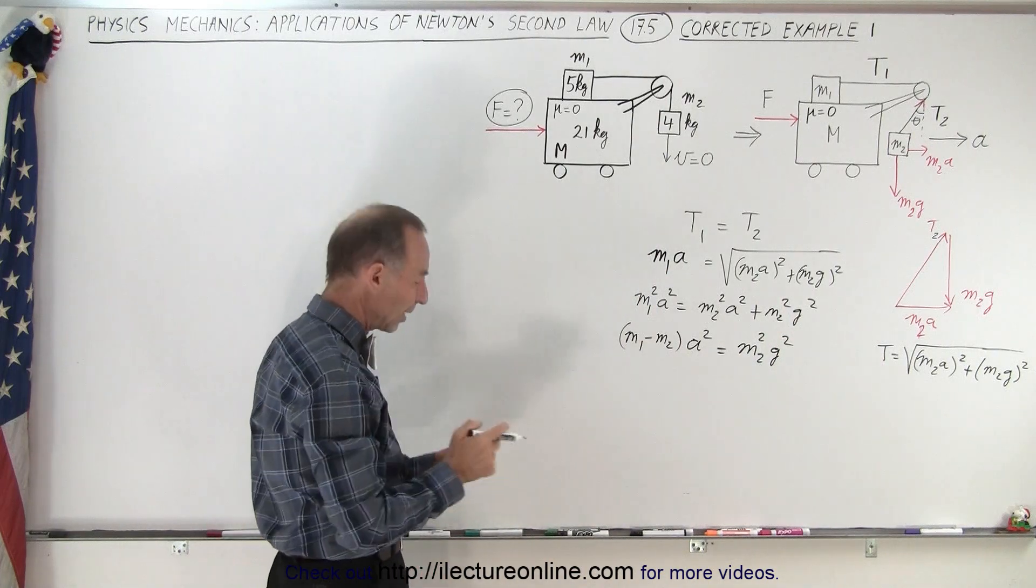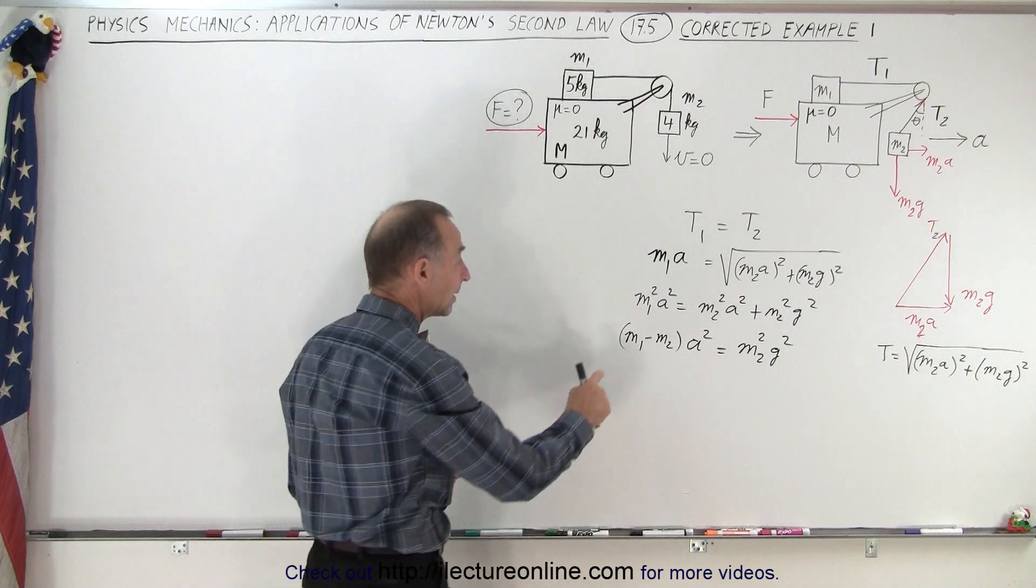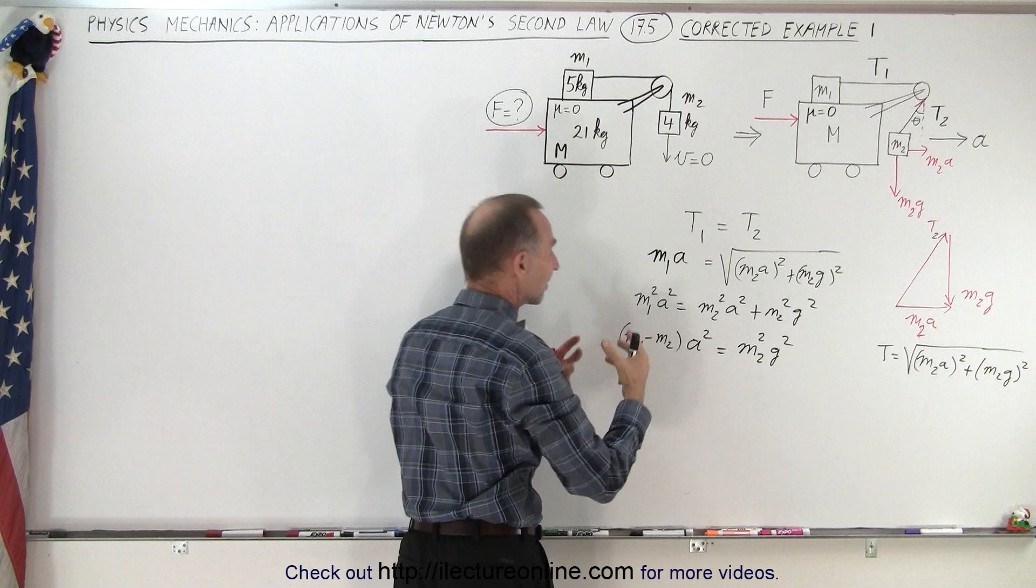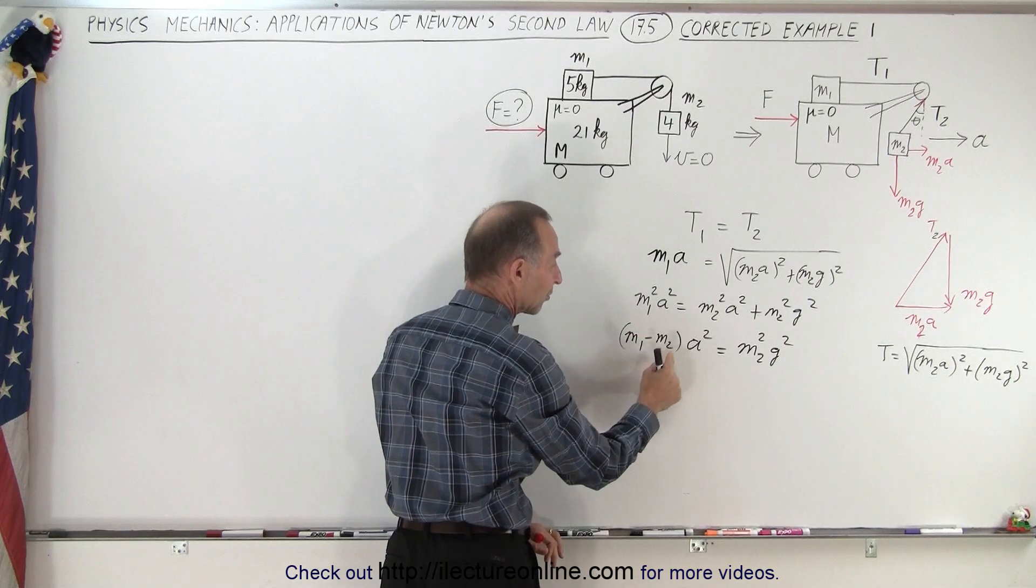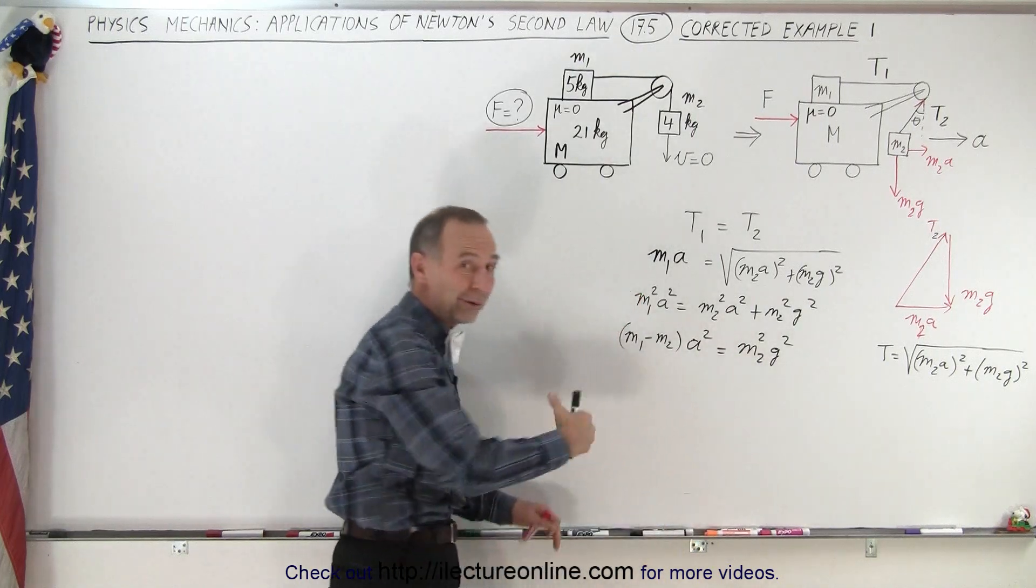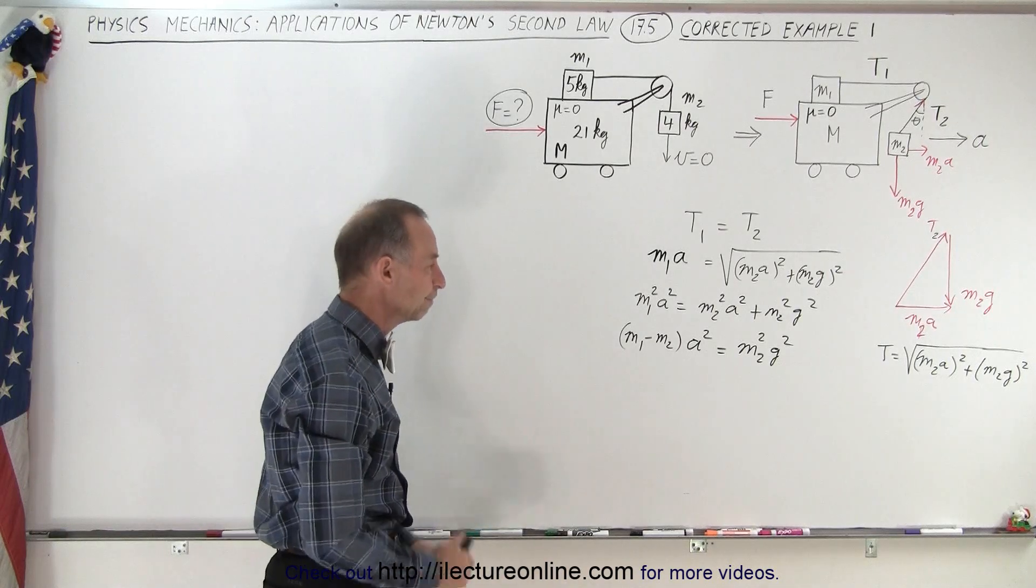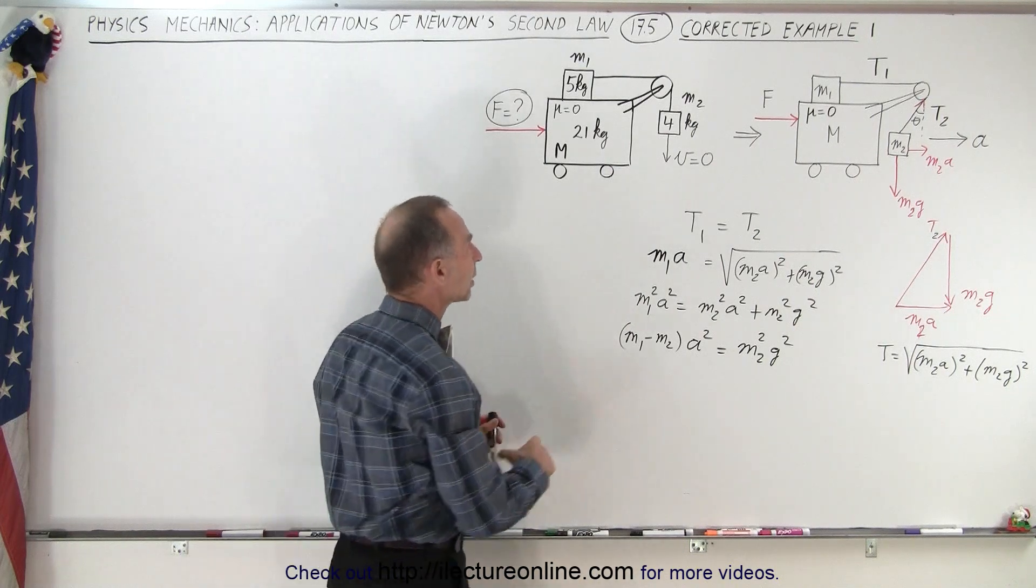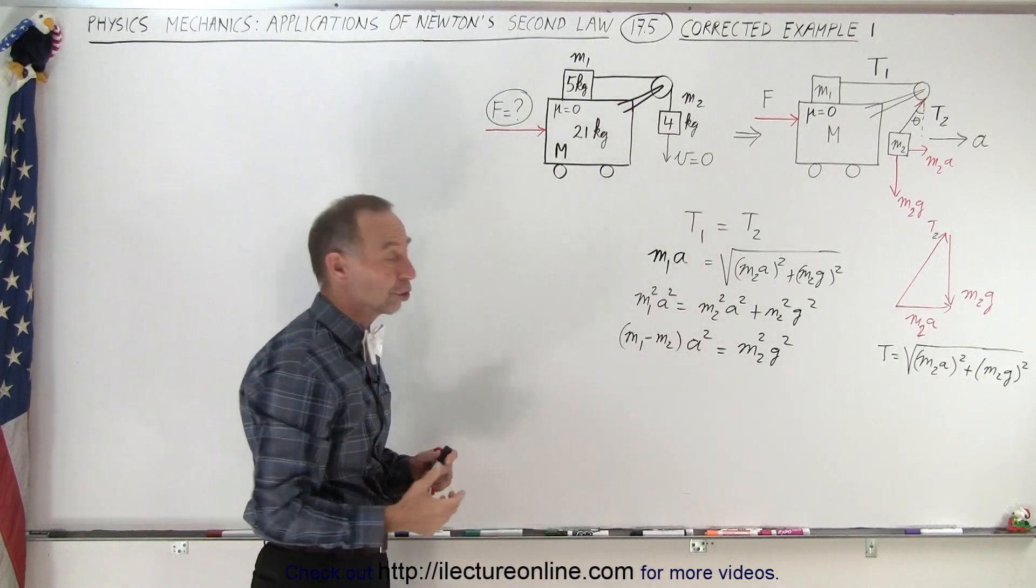Now, here's the key to understanding the mistake in the other problem. In the previous problem that we tried to do, these two masses were equal to each other. The mass on top and the mass hanging have the same mass. And notice when you subtract the two masses, you get zero, so we have 0a squared equals something g squared. So zero equals some number, and that's of course impossible, and therefore there was no solution to that problem. Therefore it needs to be solved like this, and we then realize that this mass must be less than this mass, or we don't have a solution.